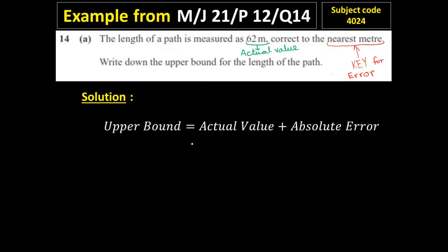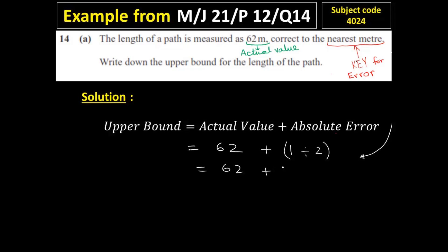The actual value is 62 meters. Write down 62 plus the absolute error. For the absolute error, use the key: nearest one meter. So one divided by two, or 0.5 — the absolute error is 0.5. So 62 plus 0.5 gives an upper bound of 62.5 meters. This is your final answer for question 14, part A.